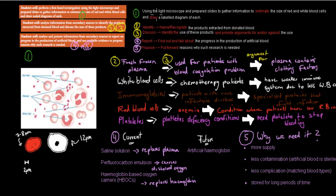The first one I'm going to cover says: using a light microscope and prepared slides to gather information to estimate the size of red and white blood cells, and draw a labelled diagram of each. You need to know the procedure of the experiment you went through, but here I'll just cover the estimate and draw a labelled diagram part.